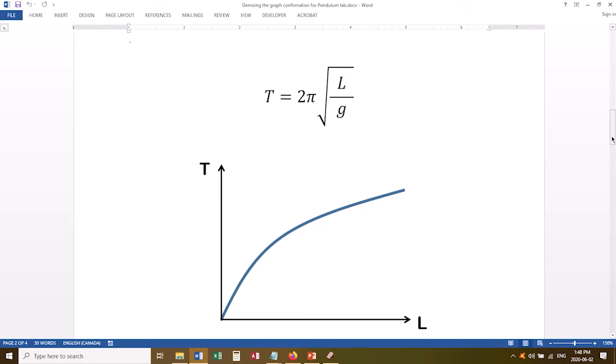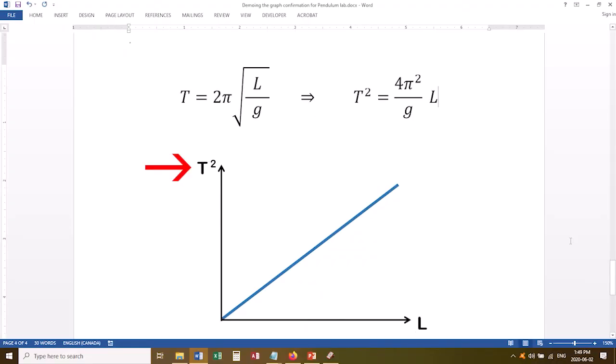There's two ways to do it with this equation. We can graph T versus the square root of L, and then we expect to see a straight line graph. The second way is to graph T squared versus L. The template spreadsheet that I've given you sets it up this way, expecting you to graph T squared versus L.